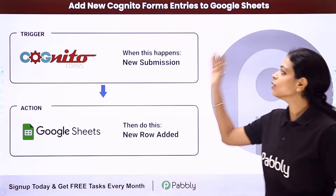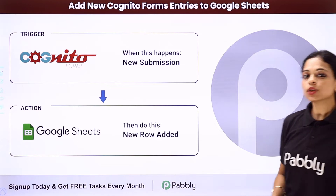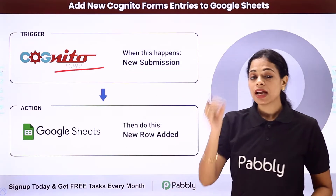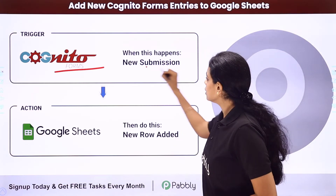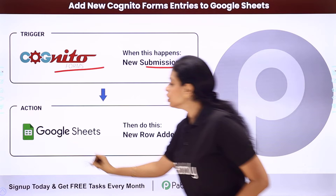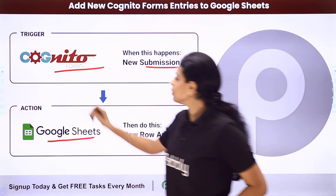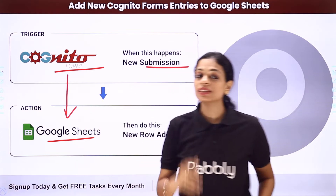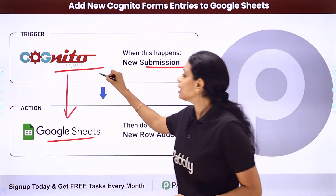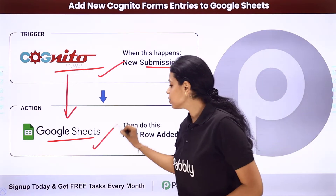In this video, we are going to see how to add new Cognito Forms entries to Google Sheets. Let's say you are using Cognito Forms as a form builder application, and you want that every time there is a new form submission, the data should be added to your Google Sheets. For this, you will have to integrate these two applications, and the same can be done using Pabbly Connect software. Your trigger application would be Cognito Forms and your action application would be Google Sheets.